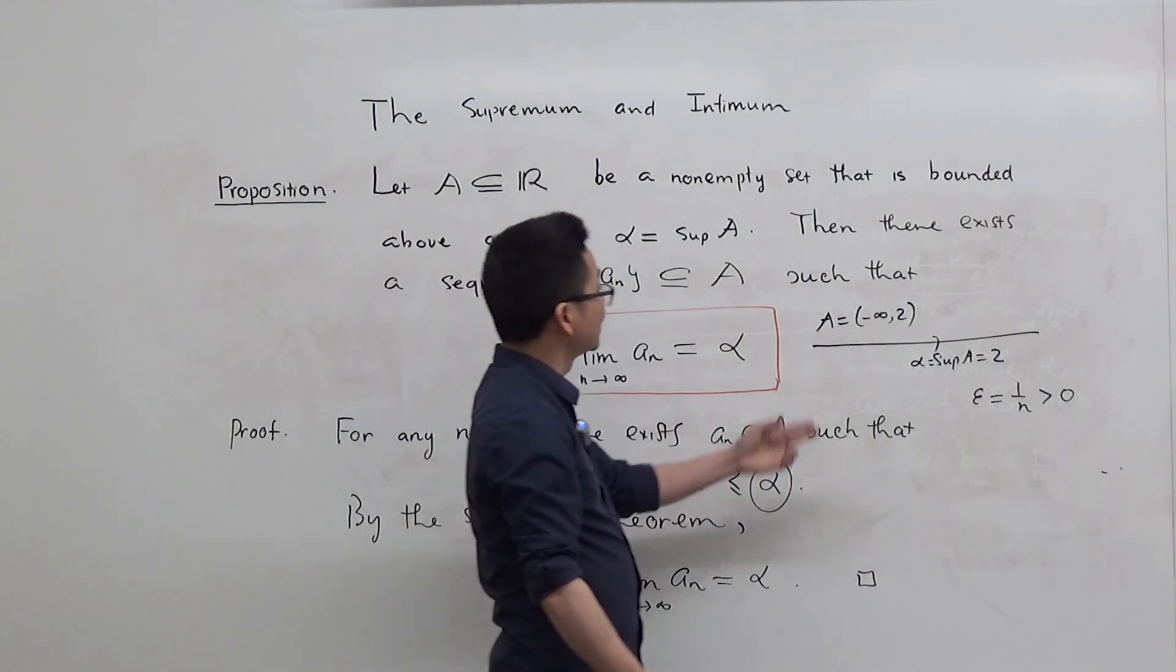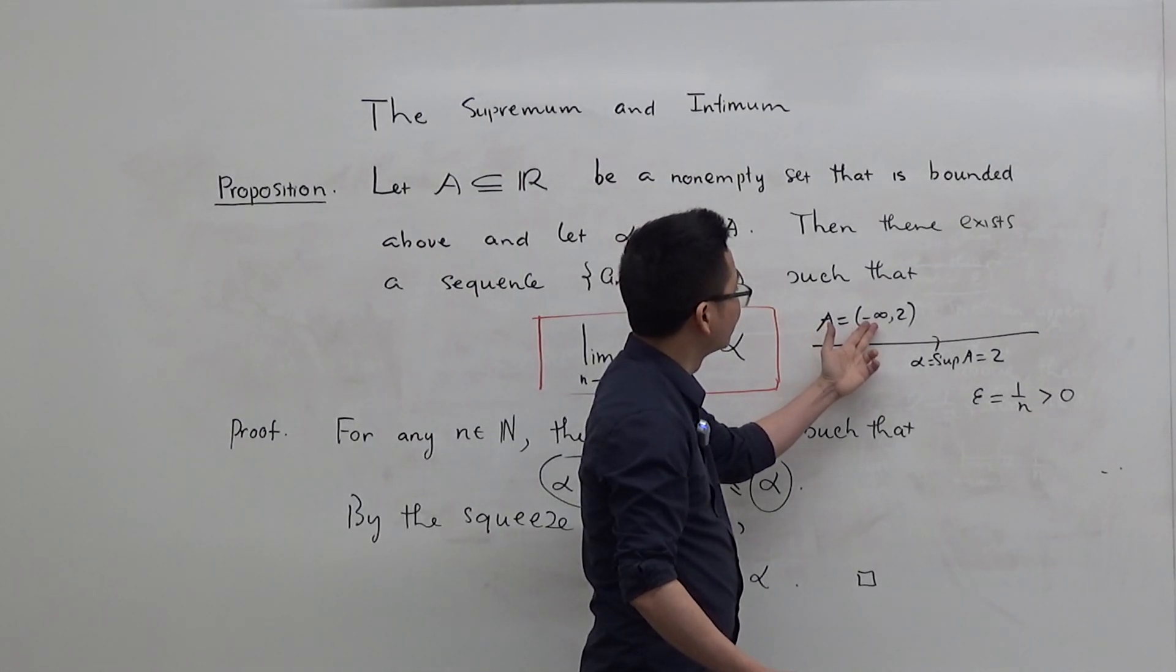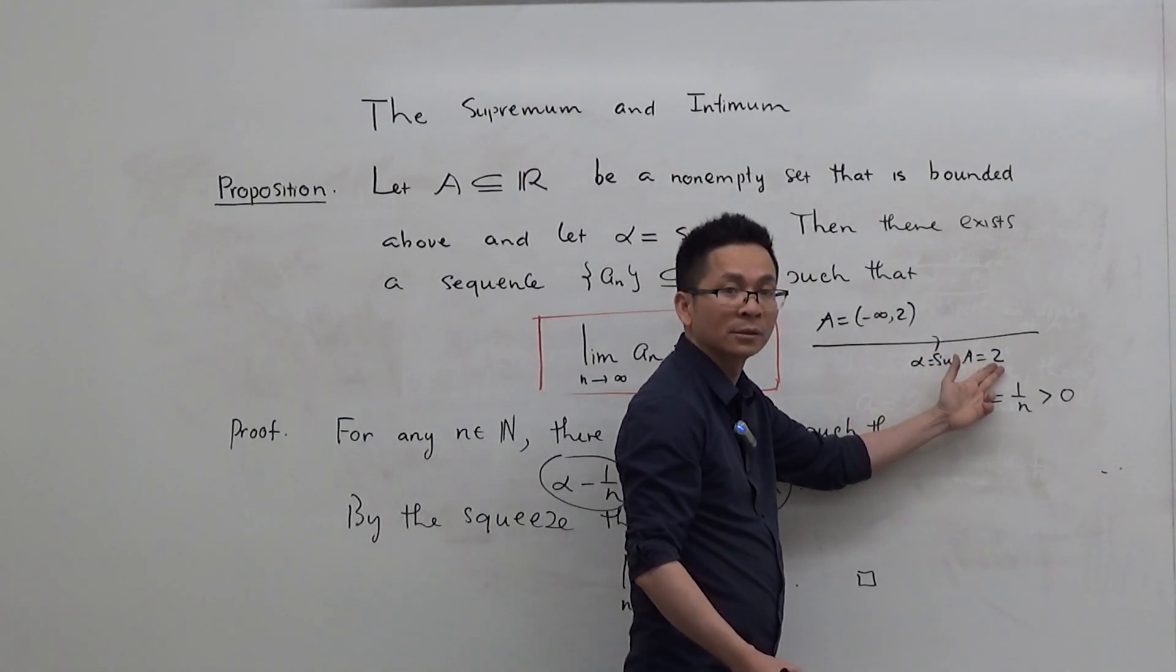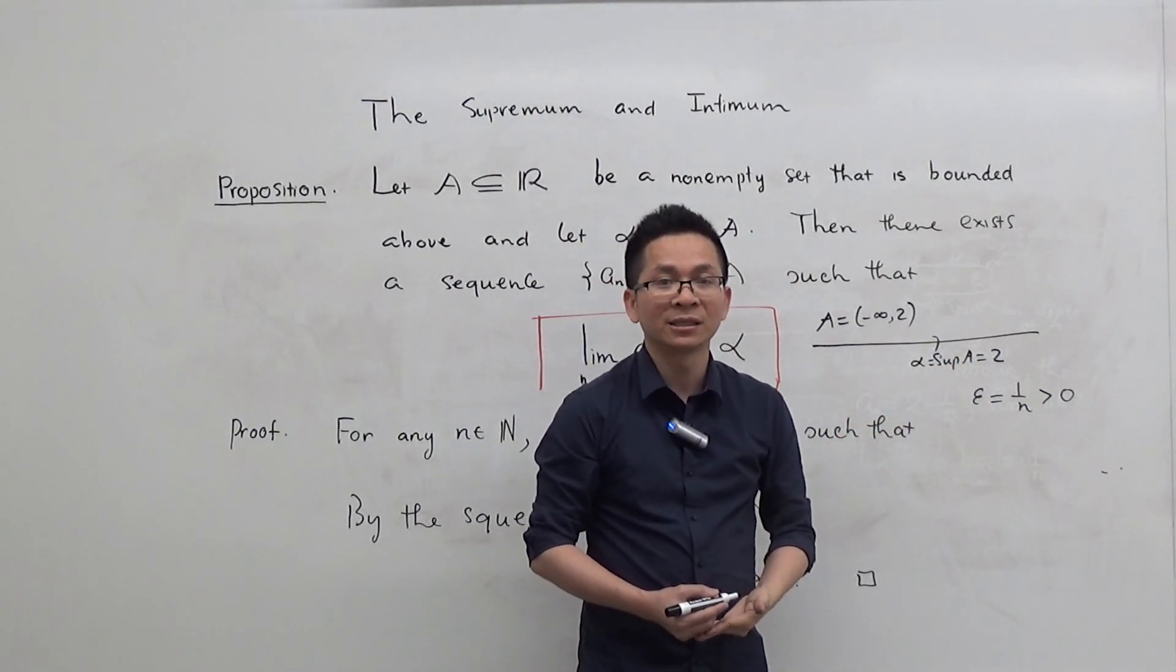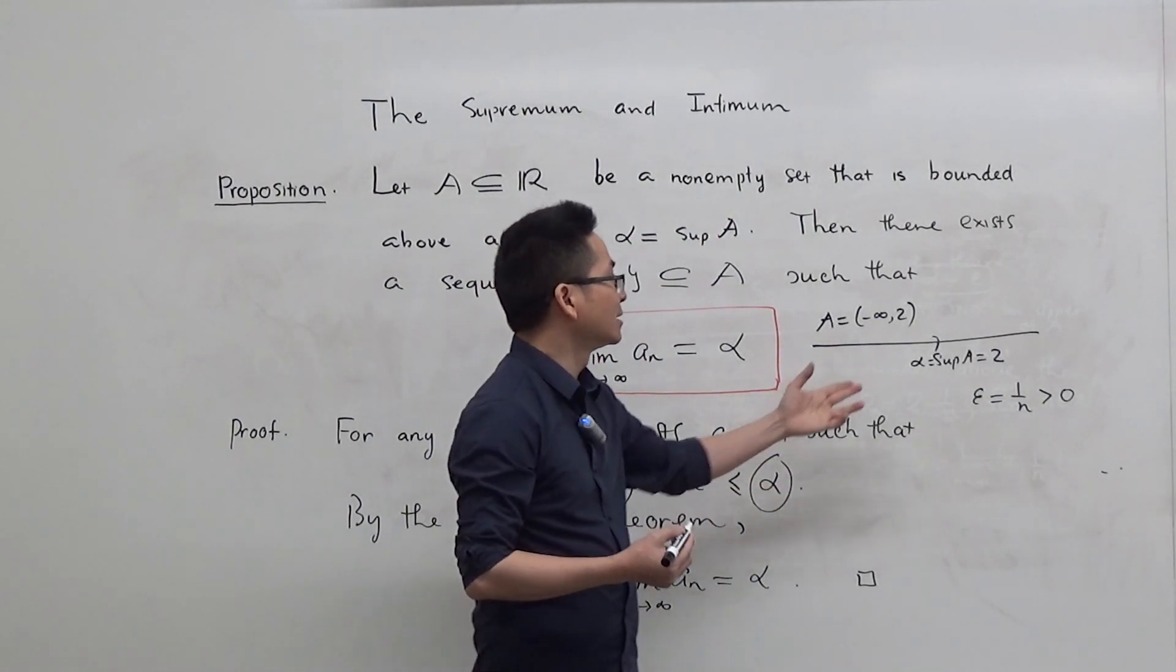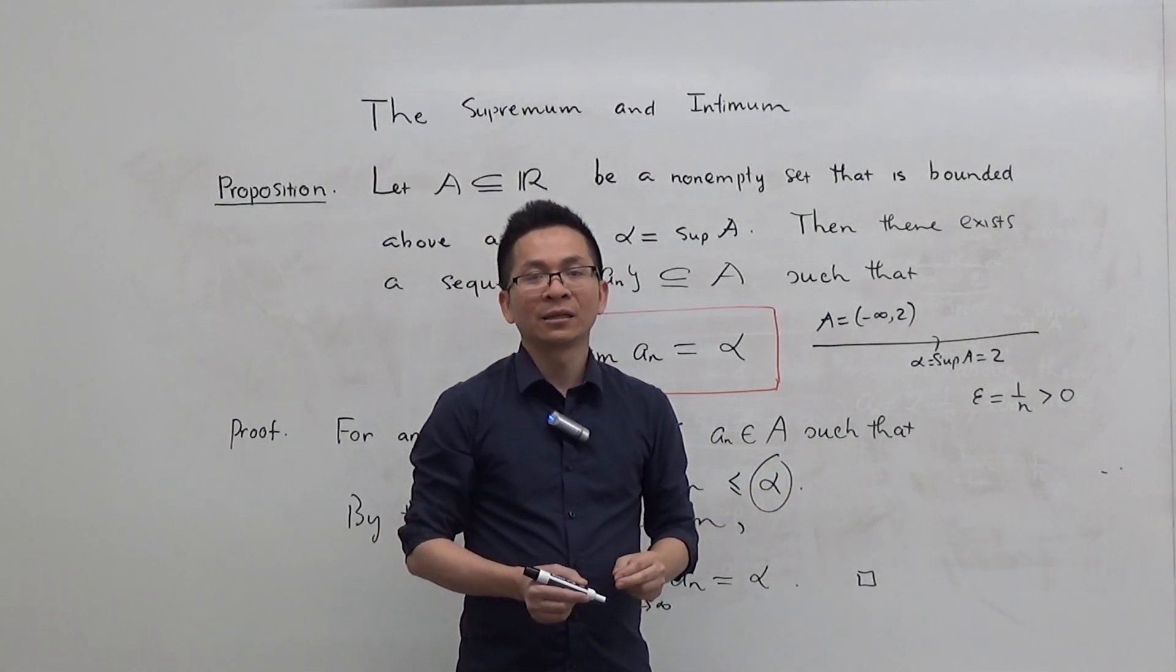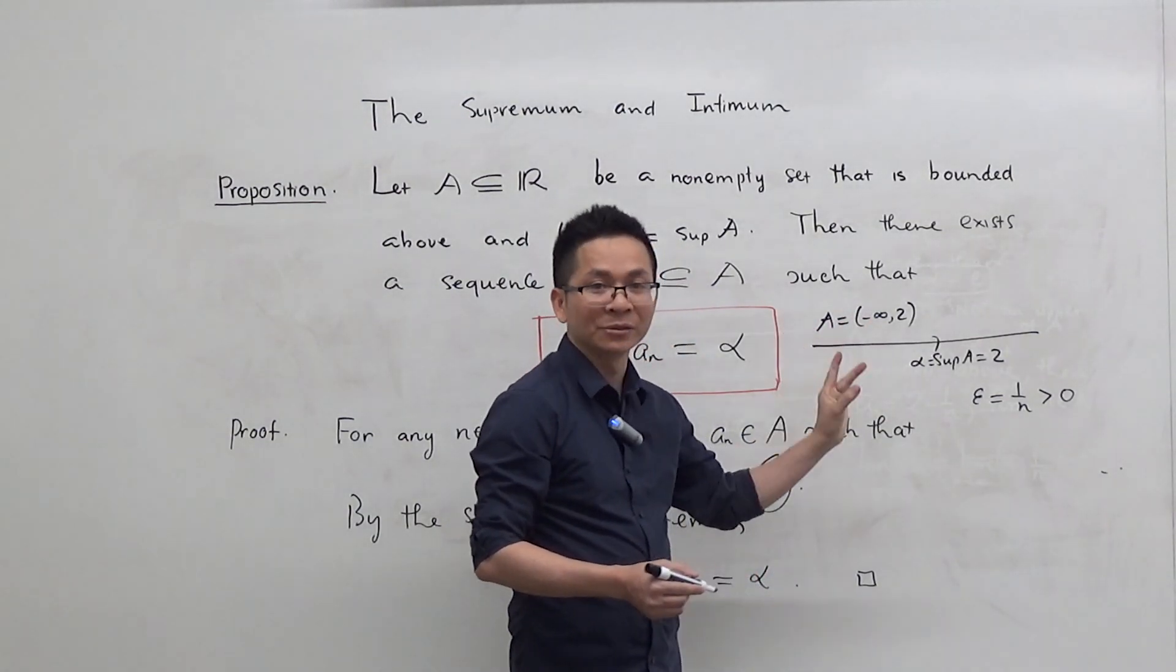And now, here is an example. A here is the open interval minus infinity to 2. The supremum of A is 2. So by the conclusion of this proposition, there should be a sequence in A that converges to 2. And we can easily find an example of a sequence in A that converges to 2.